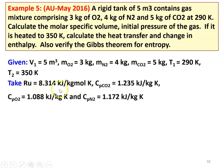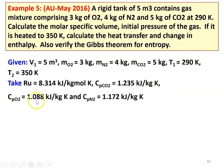We take the properties of the gases — these are not given in the problem, so we assume them. The universal gas constant is 8.314 kJ/kg·mol·K. Assumed CP values: CO2 = 1.235 kJ/kg·K; O2 = 1.088 kJ/kg·K; N2 = 1.172 kJ/kg·K.